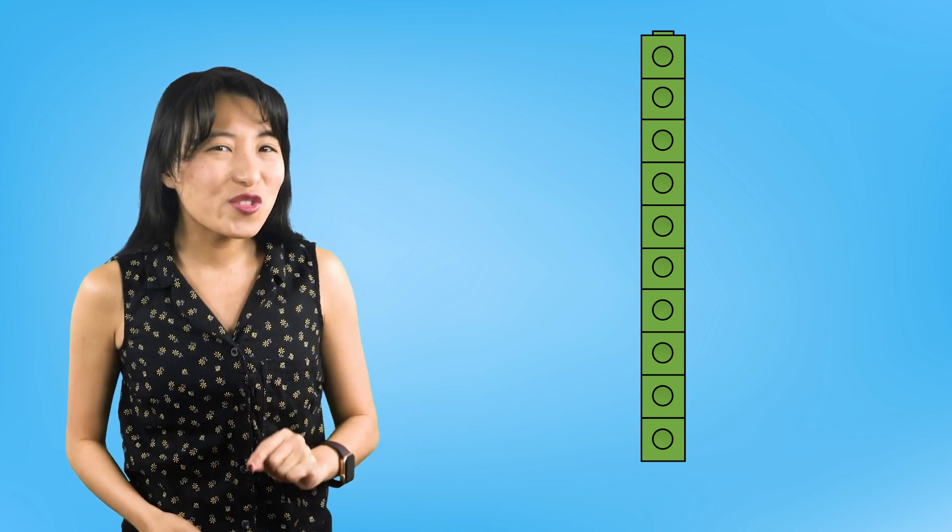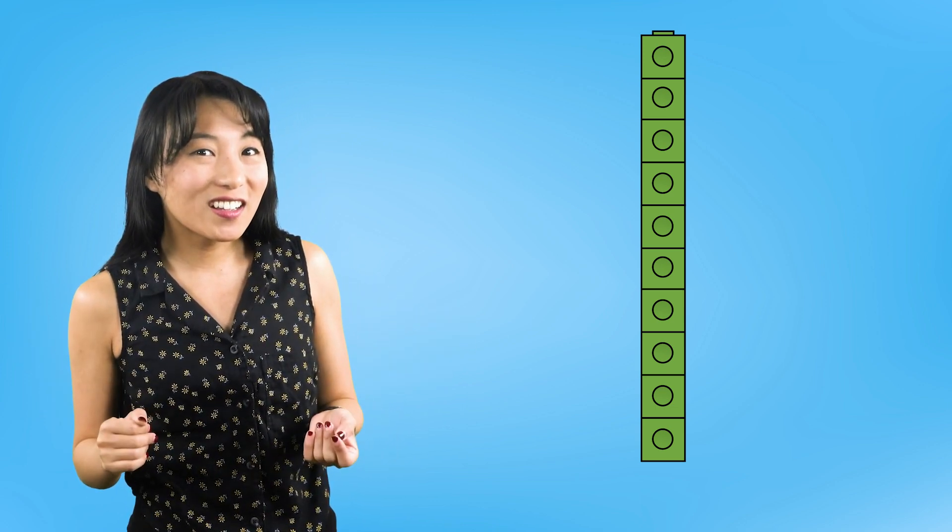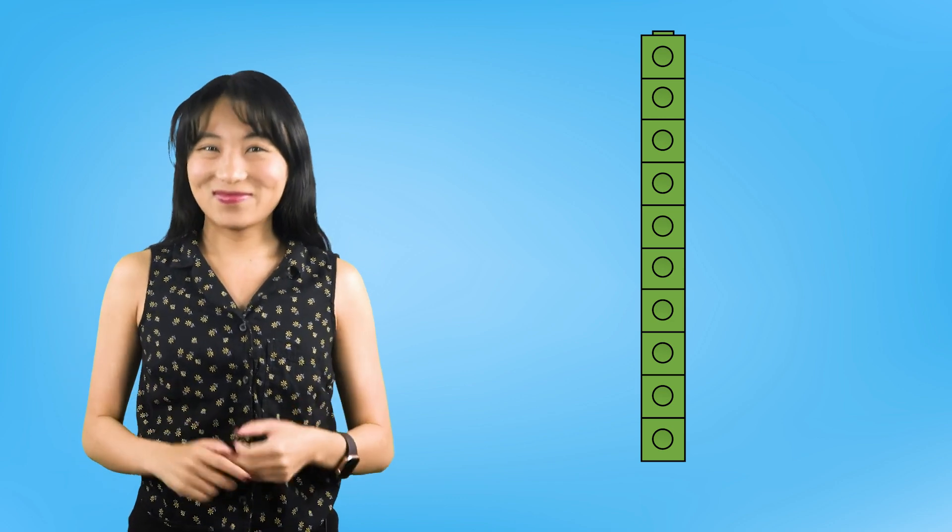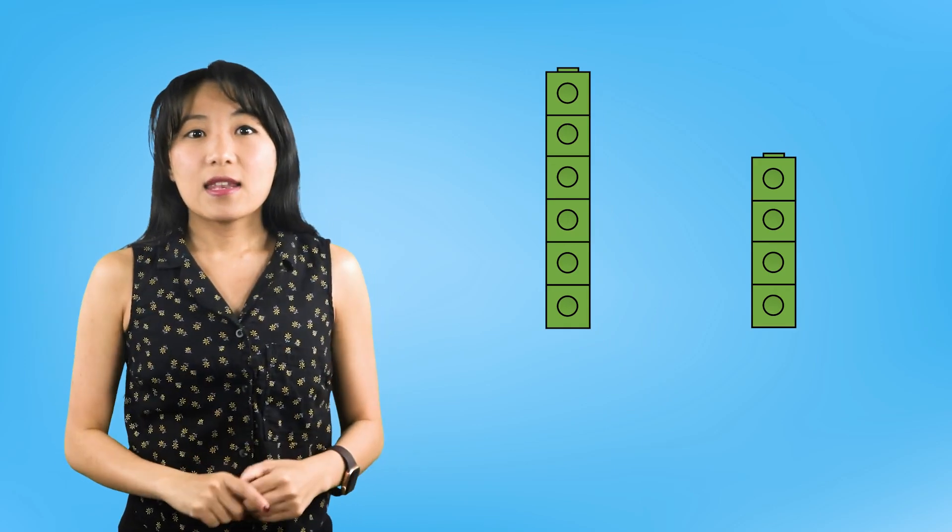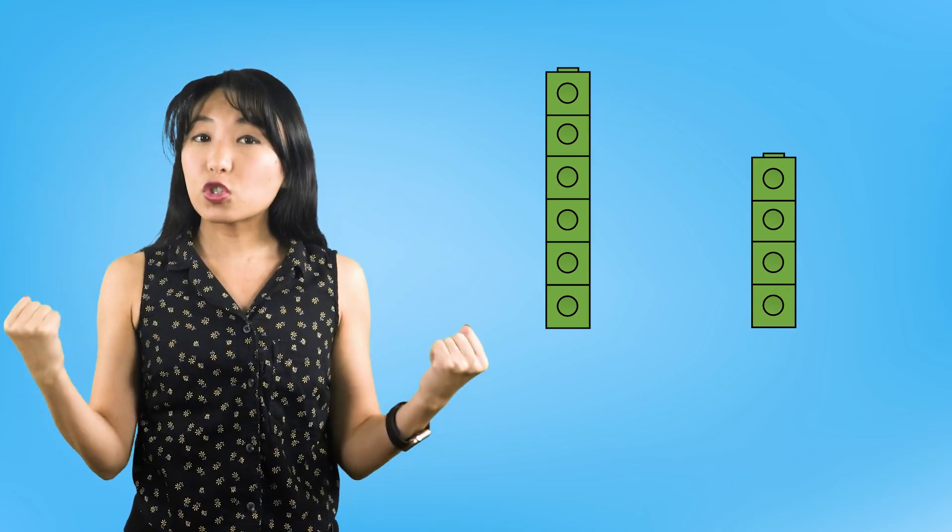How do you think we find out what the parts are? I just need to separate the whole into two parts. It's as simple as this. Now my whole is separated into two parts.